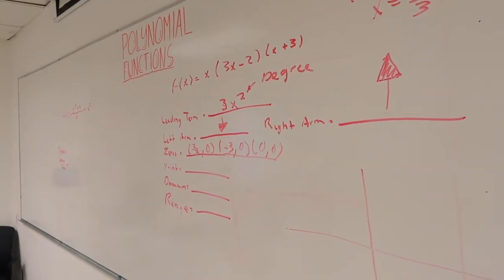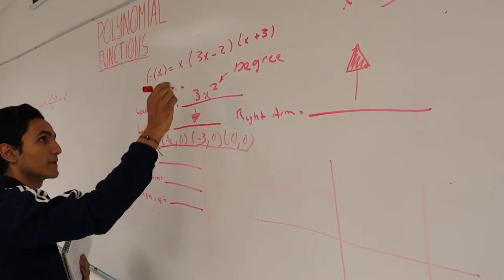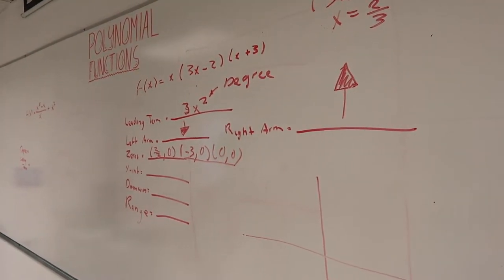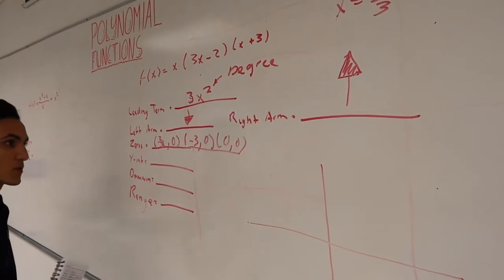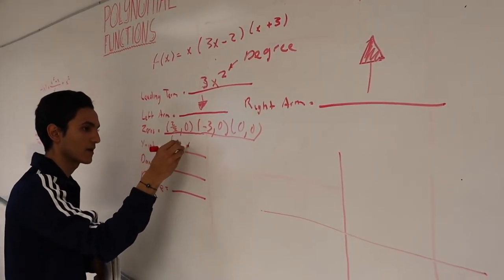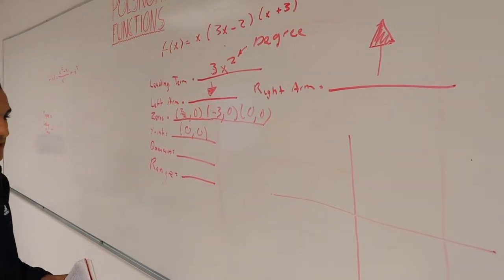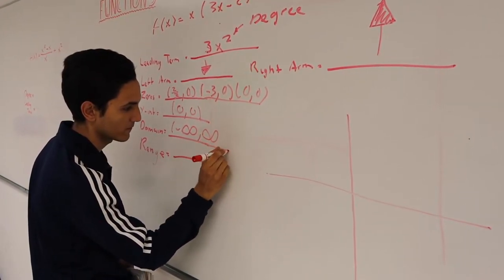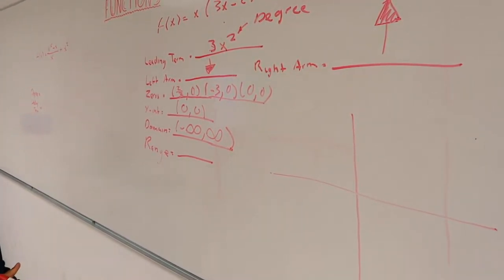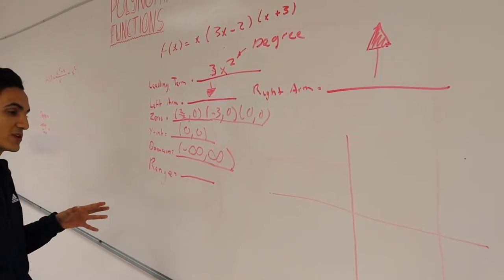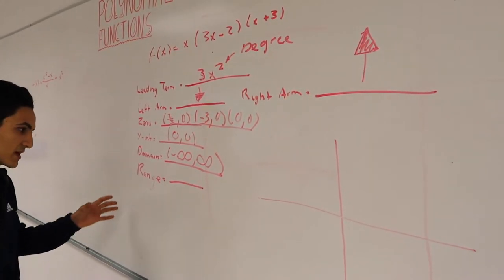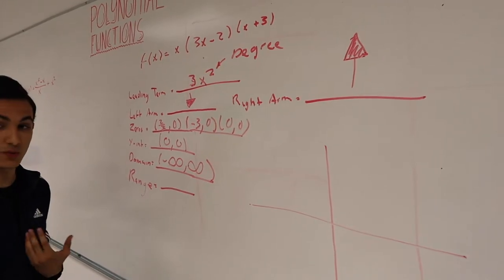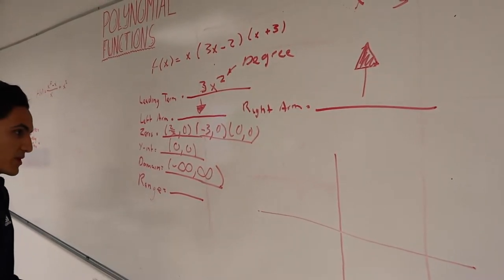For the y-intercept, we substitute x equals zero into the whole problem. Since there is no constant term without x, the y-intercept will be zero. The domain, as with every polynomial, will be all real numbers. For the range, taking all the information we have, we understand that there is no specific restricted range, so we put an indefinite range — all real numbers.